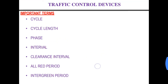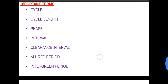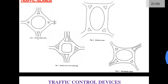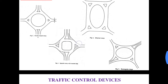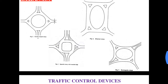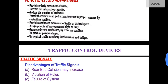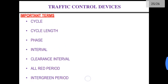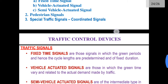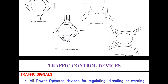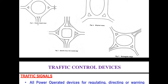Then there is all red period. All red period is the time in which the signals for all the roads in this intersection are at a red phase. Then inter-green period: inter-green period is the period between the green signal of any two roads.